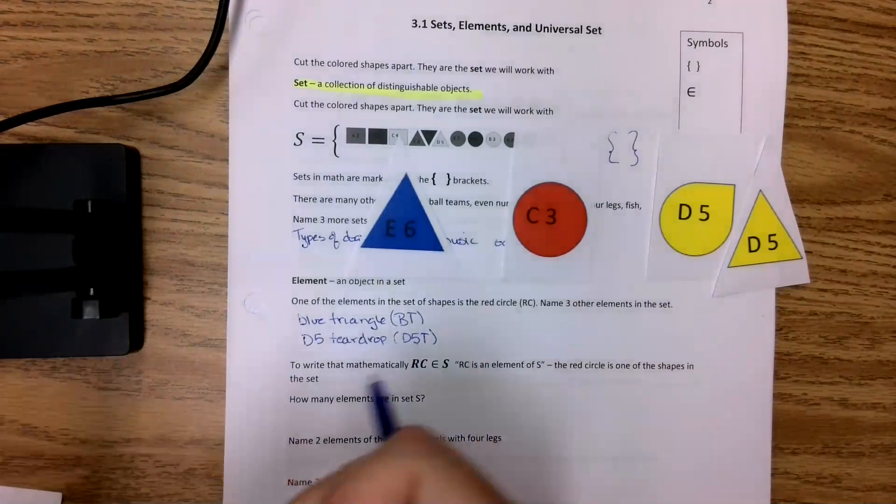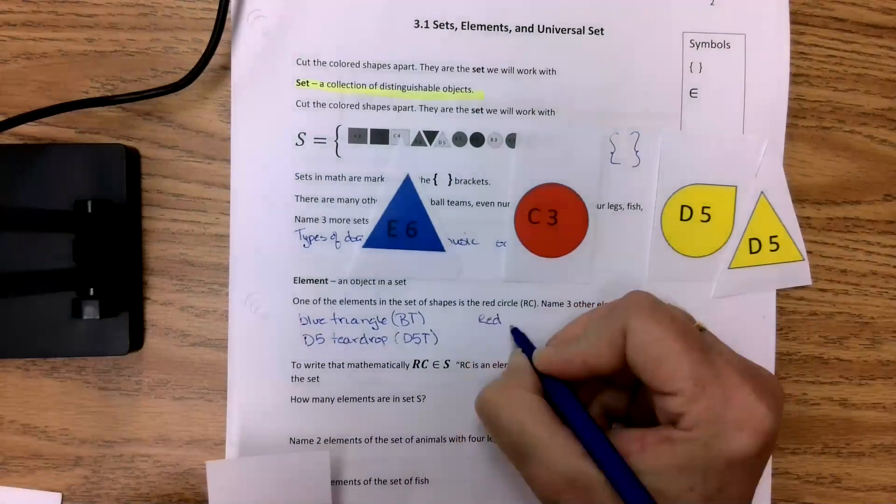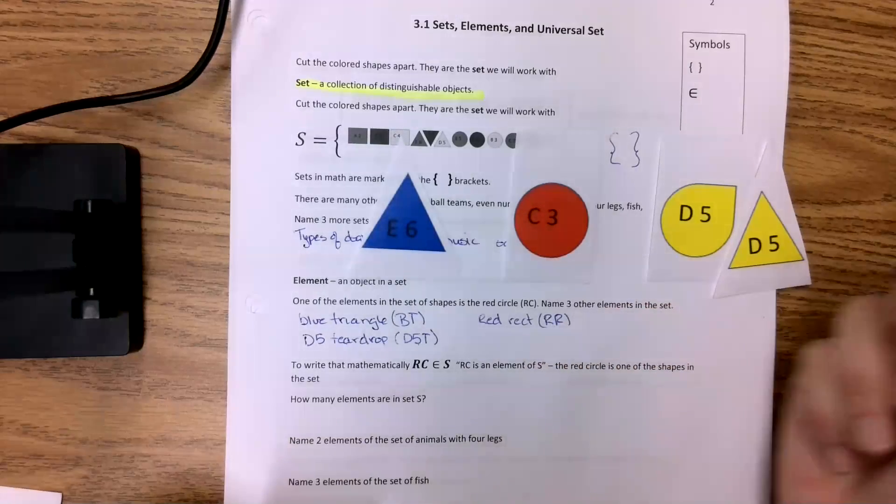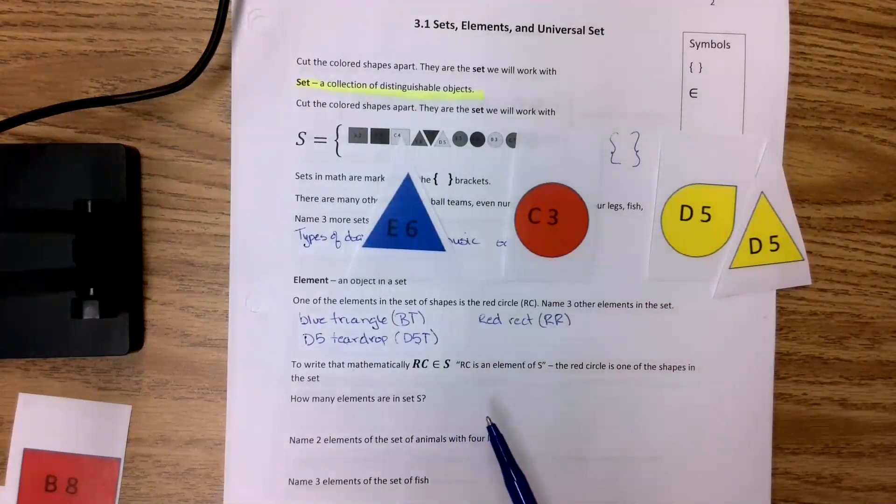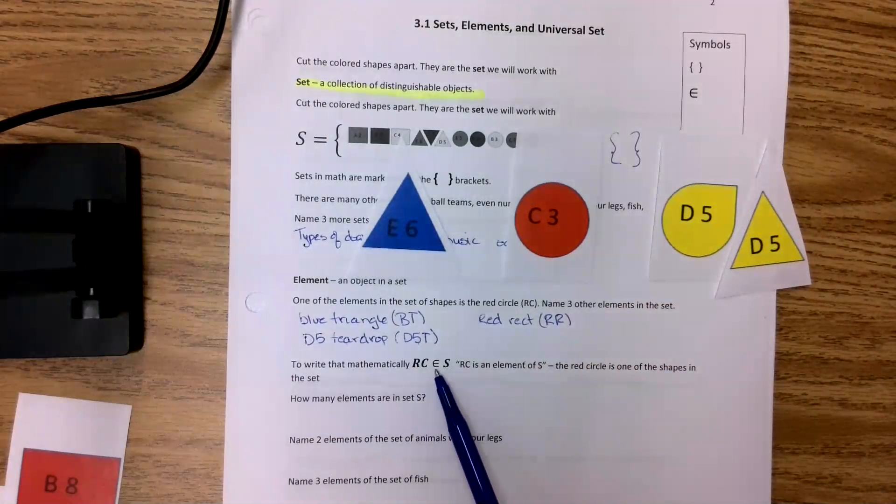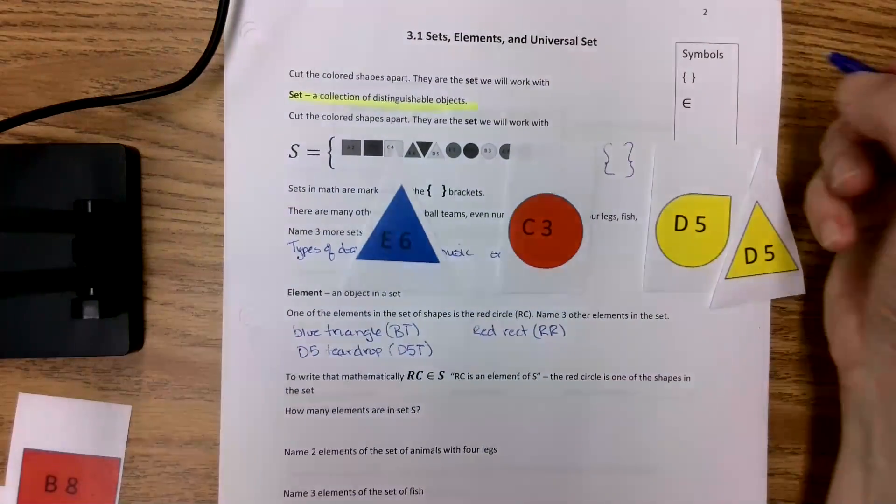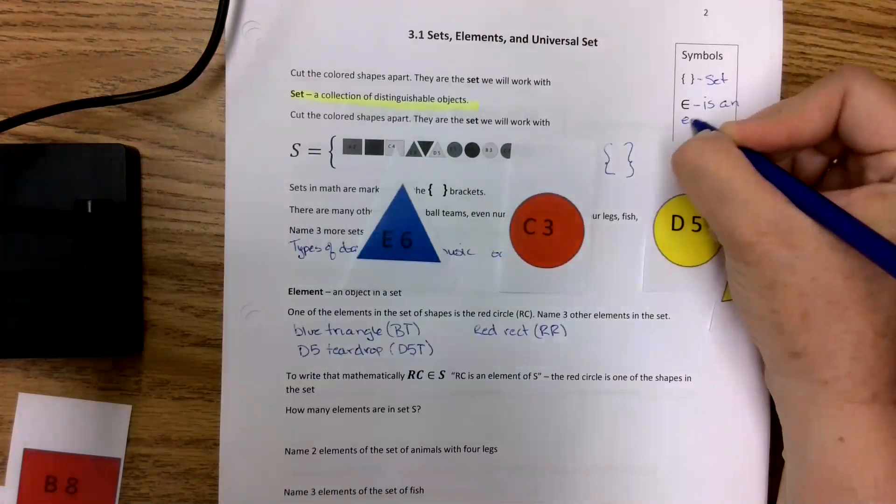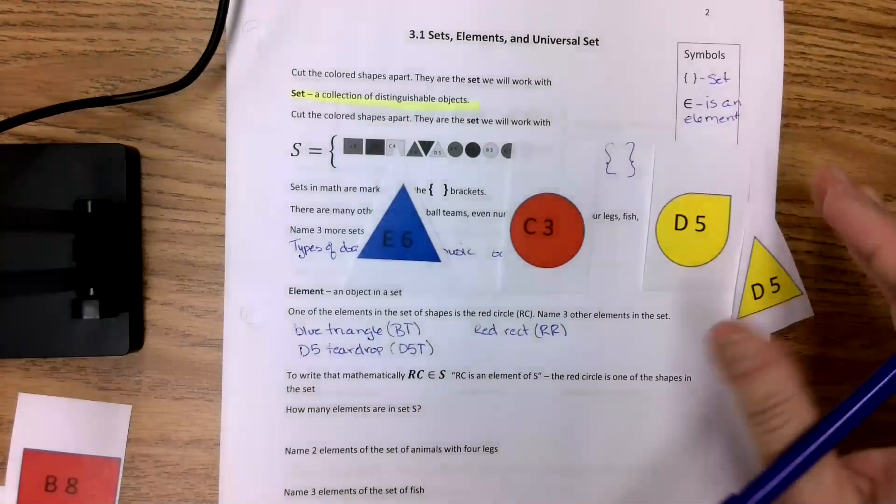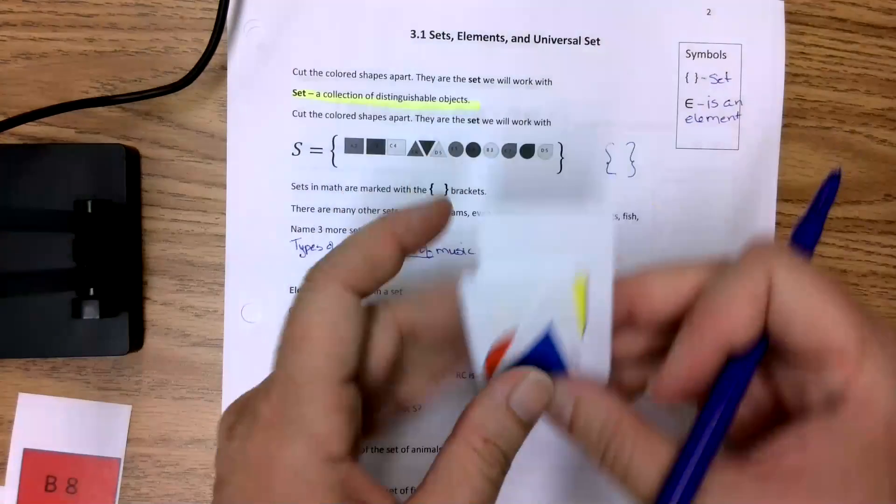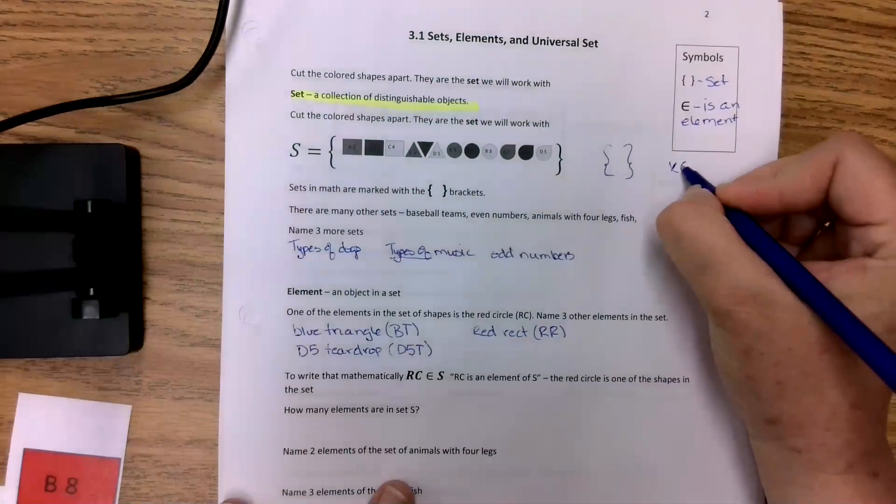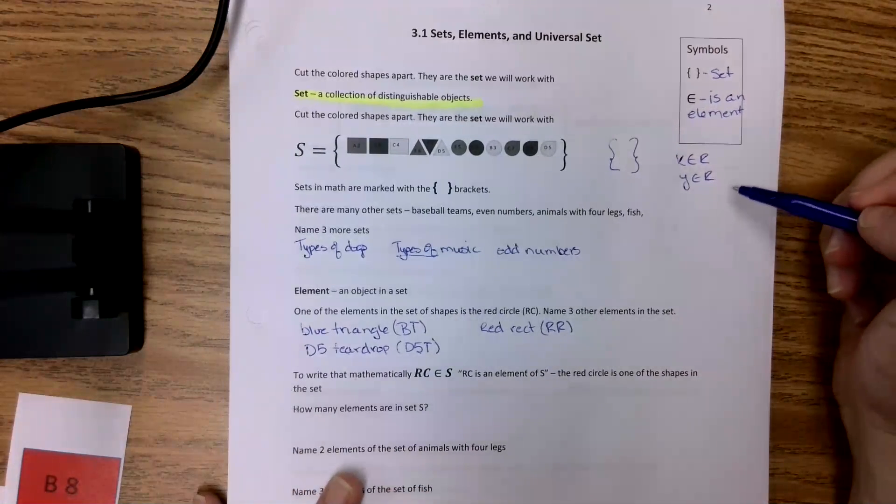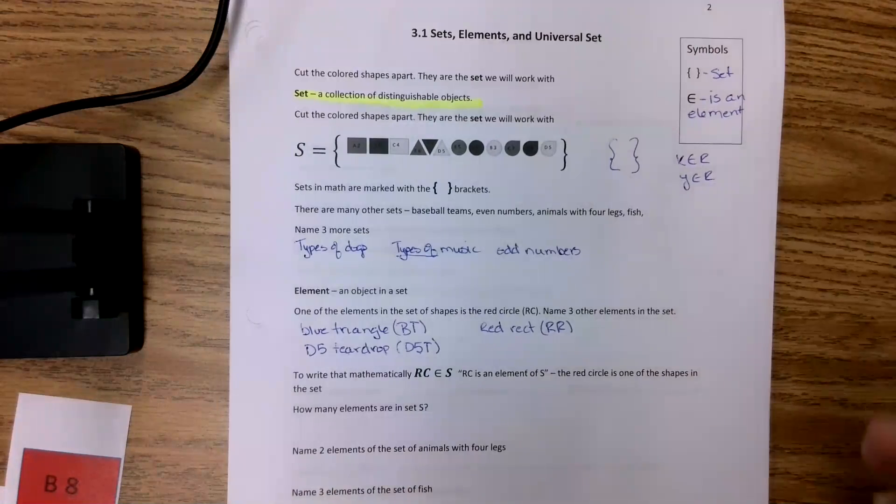Red rectangle, call it RR. There we go. To write that mathematically, we would say red circle is an element of S. So this crazy symbol here. We should put this at the top. This means it's a set. And this means is an element. But that shouldn't be surprising because if you remember from last semester when we talked about X is an element of real numbers and Y is an element of real numbers. It's the same thing. It's just we're using it with sets now.